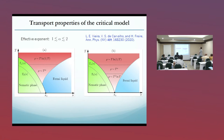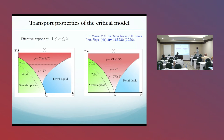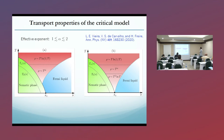Once we do that, we get a phase diagram with a nematic phase and a Fermi-liquid phase. Within the critical regime, we get the resistivity proportional to T to the power alpha, where alpha lies within the interval one to two. This is for short-range disorder only. We can also include random-field disorder and get a slightly different phase diagram, also with a nematic phase and a Fermi-liquid phase.